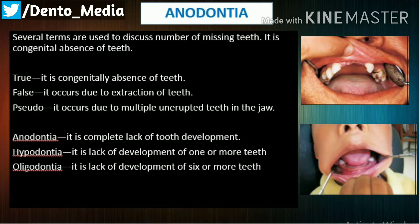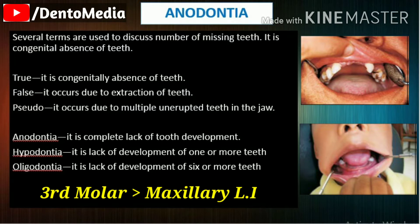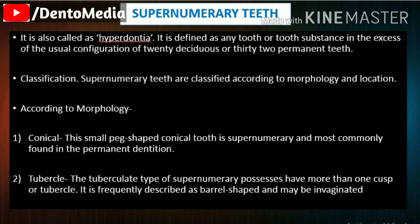Studies on the frequency of missing third molars have shown this tooth to be congenitally absent. Other studies have shown that the maxillary lateral incisors and maxillary or mandibular second premolars are commonly missing.